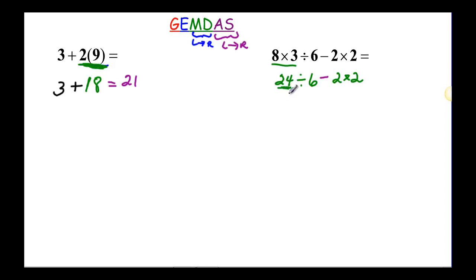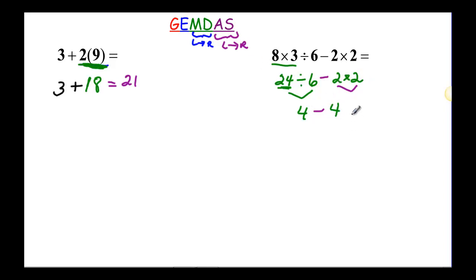Now we're ready to do this part. So 24 divided by 6 is going to be 4. And then I'm going to subtract, and I can do the multiplication: 2 times 2 is 4. And then when I subtract 4 minus 4, I get 0.